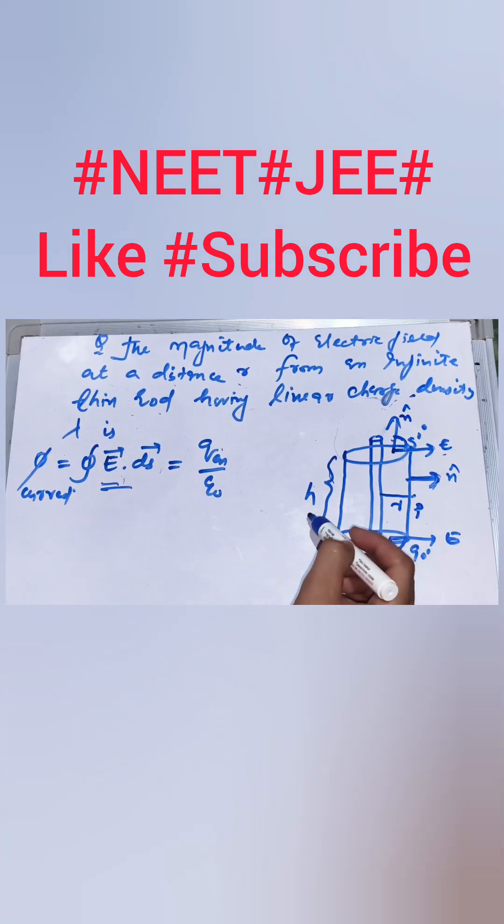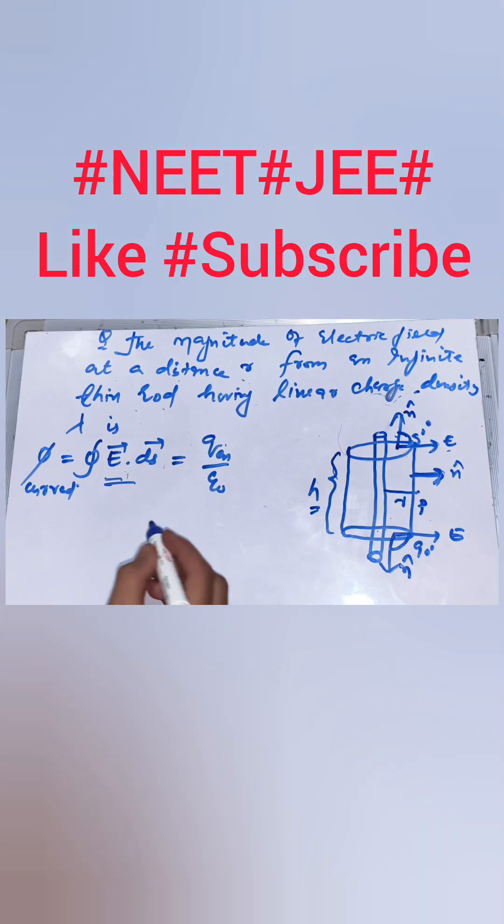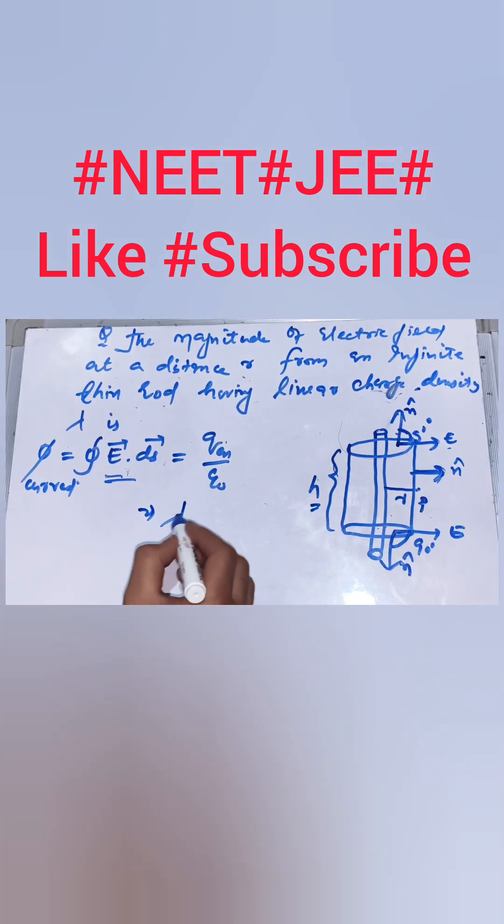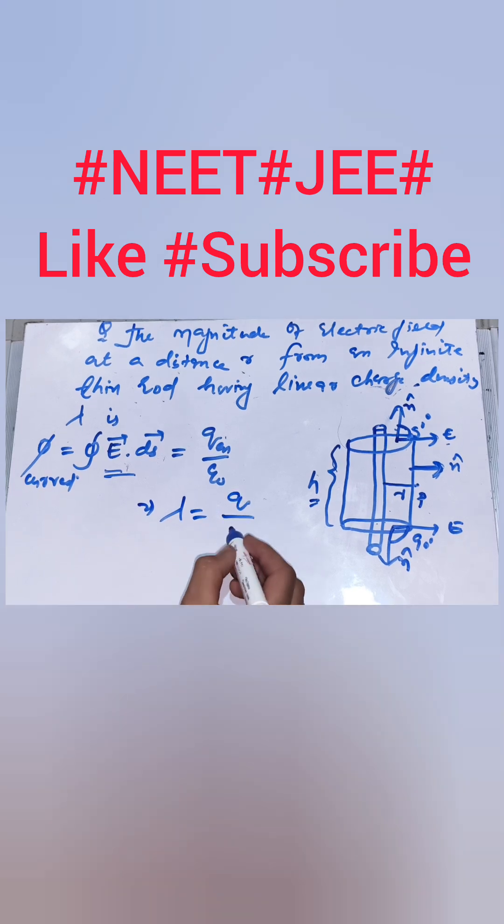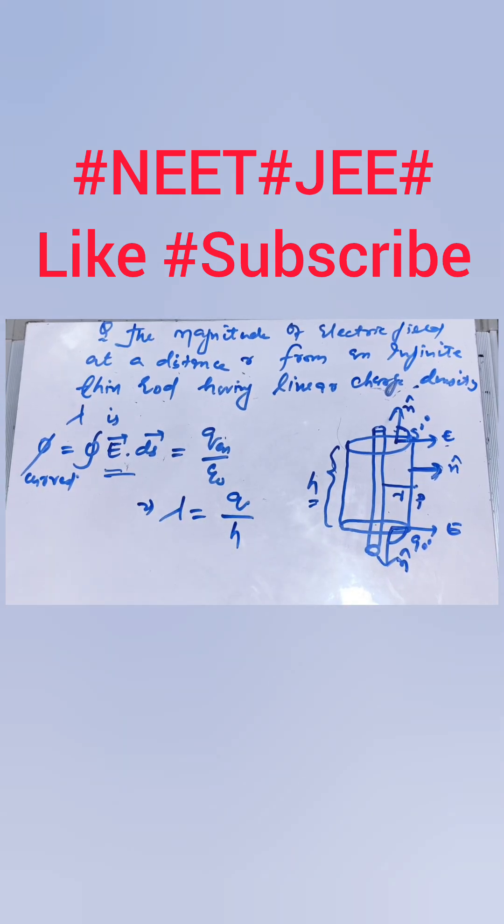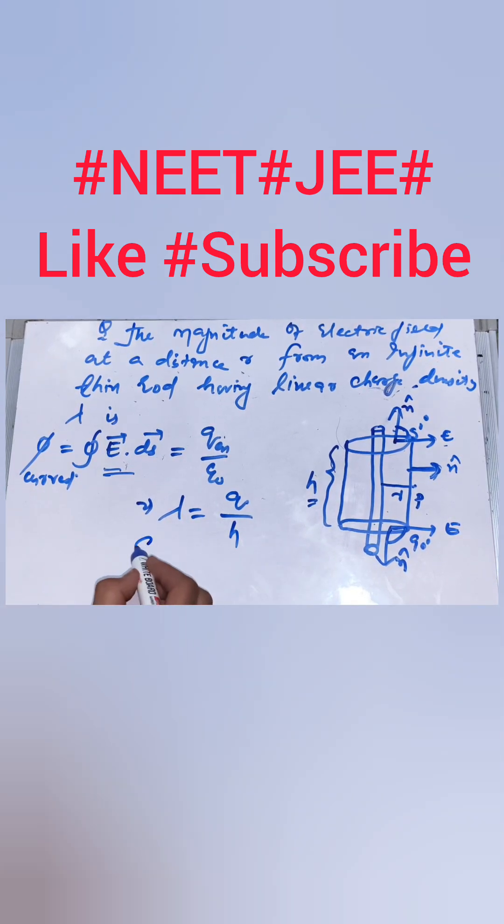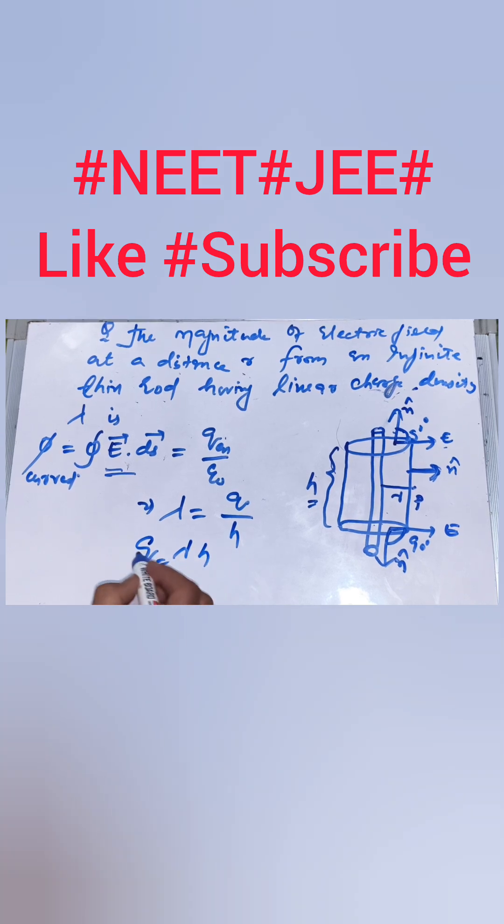Since the height of this Gaussian surface is h, we know that linear charge density is given by charge per unit length, that will be Q divided by h. So what will be Q? Q will be lambda times h.